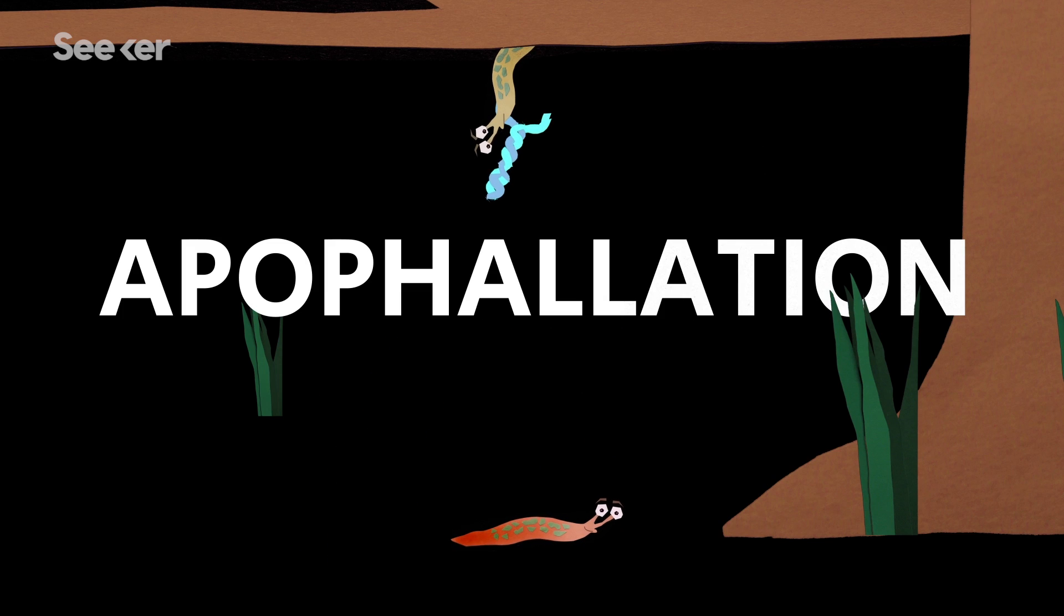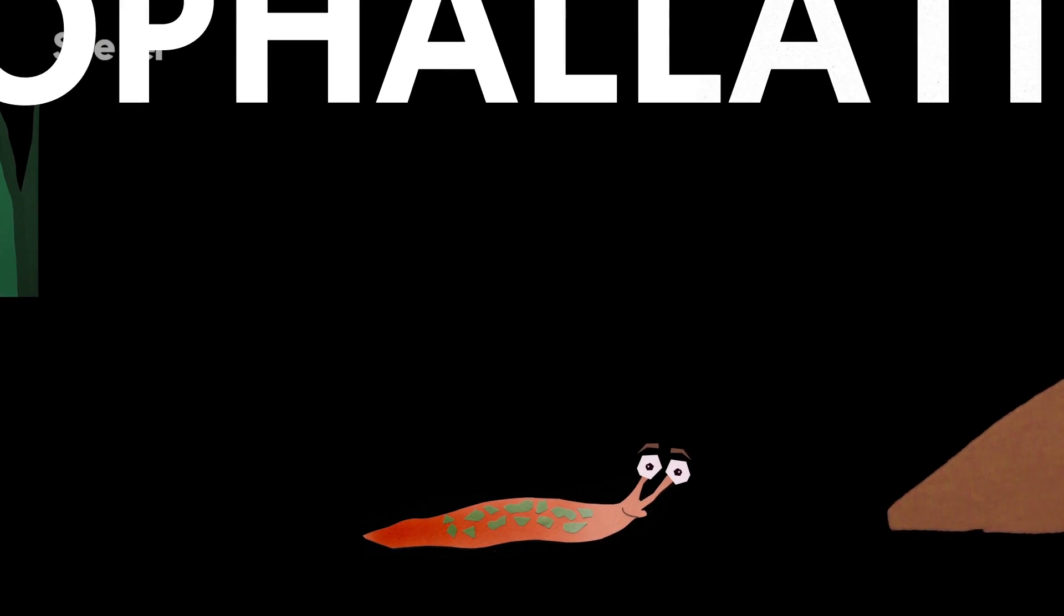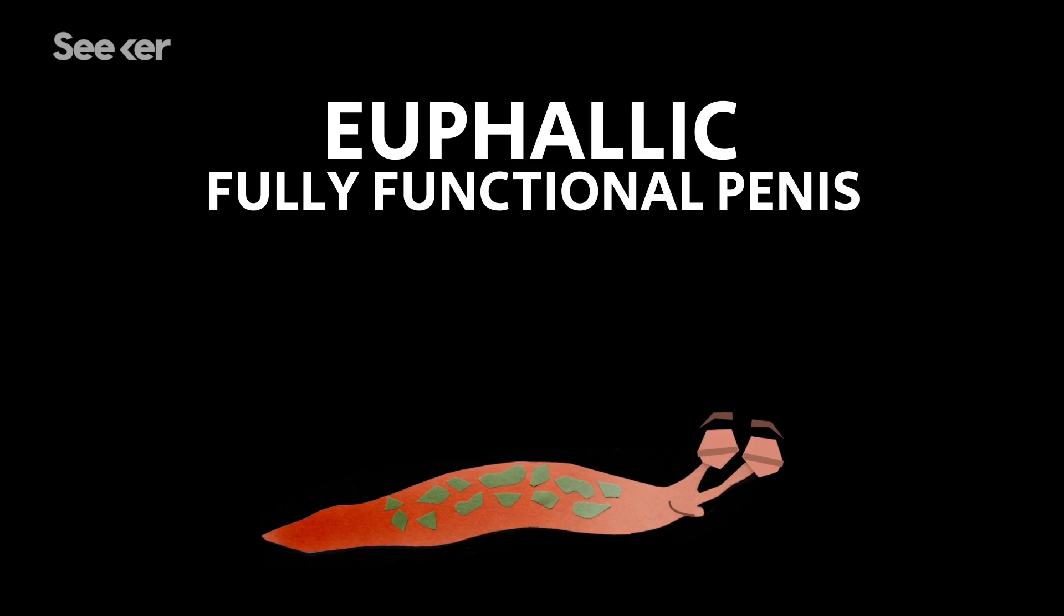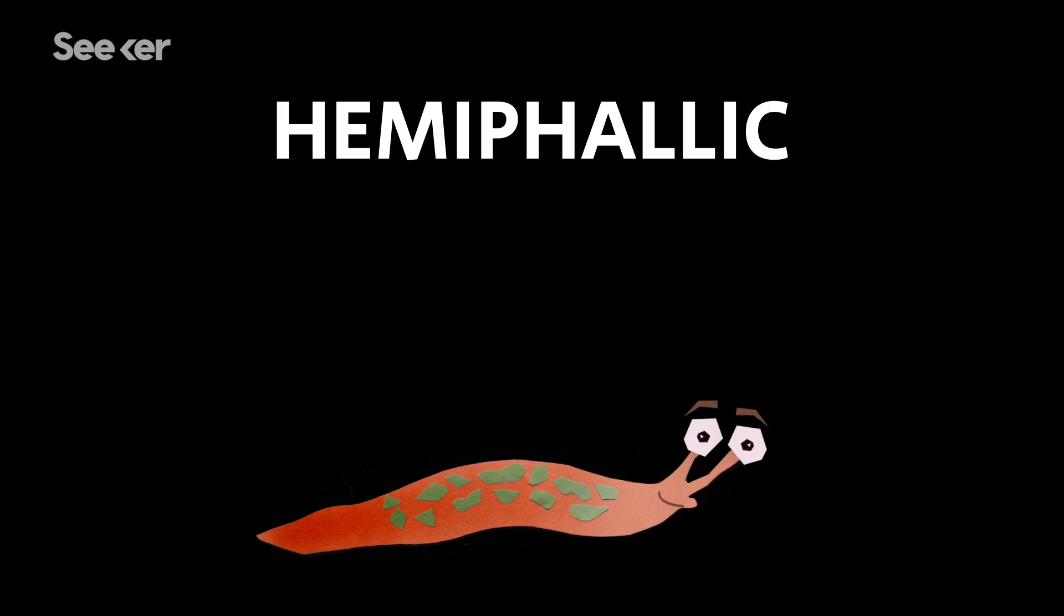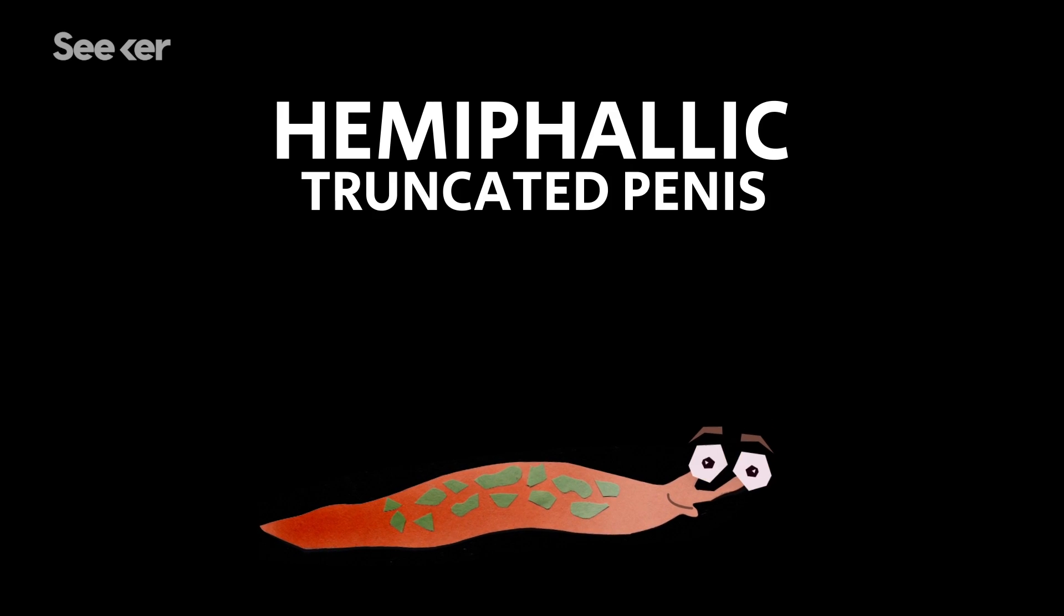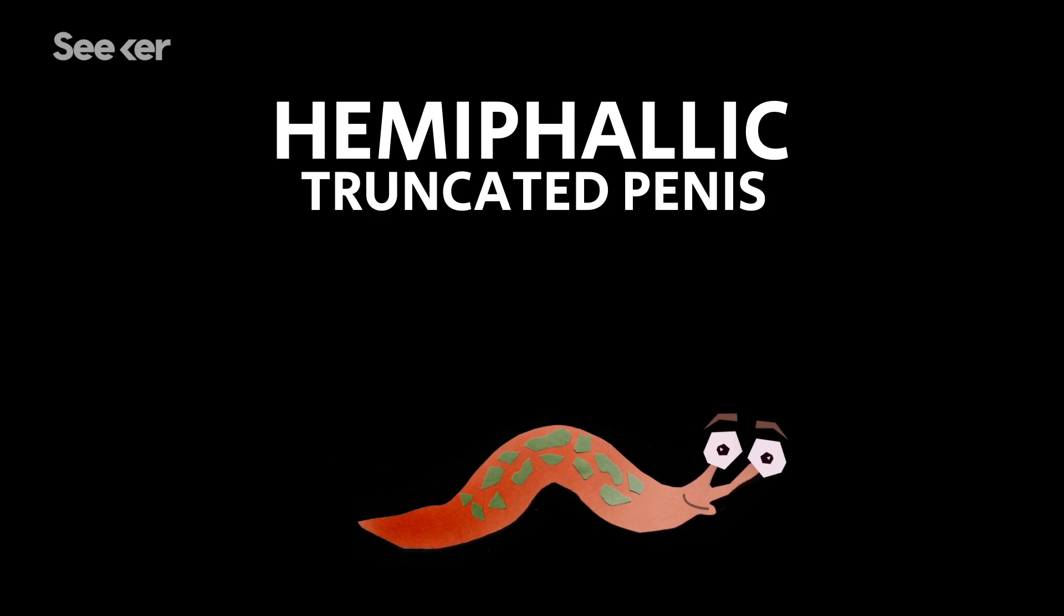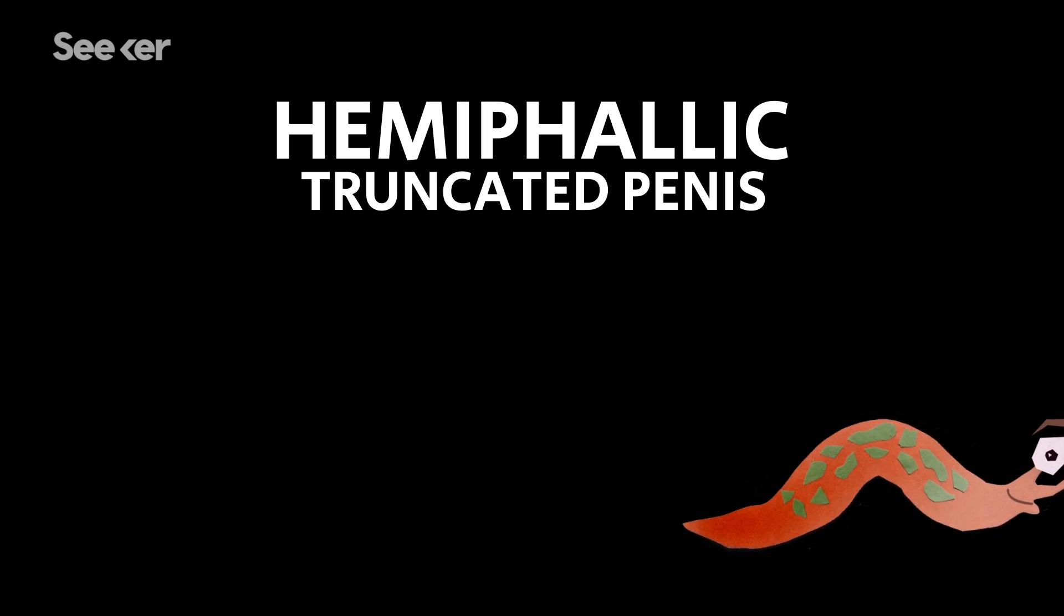This process is called apophilation, and it means that the new sex life of the bitten partner is a little different. The slug used to be euphallic with a fully functional penis, but now it's hemiphalic, which means that its penis is still there in a really truncated form, but it doesn't actually work.